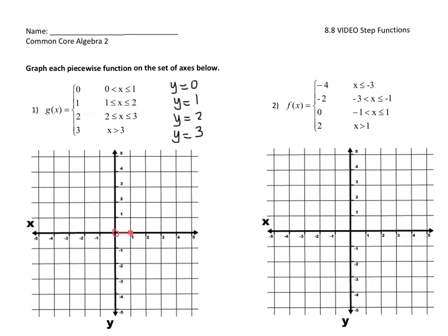Then I'd like to graph y equals 1 from 1 to 2, both getting closed circles. So the line y equals 1 is this horizontal line here, but I only want the